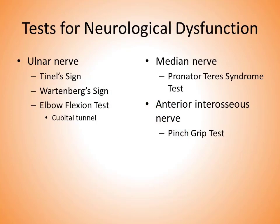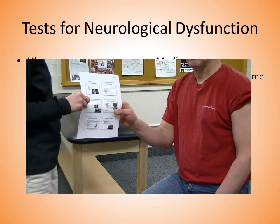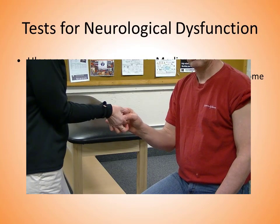There are other tests for neurological dysfunction to consider: the Tinel's sign for the ulnar nerve, the Wartenberg sign for the ulnar nerve, the elbow flexion test for the cubital tunnel specifically for the ulnar nerve, a pronator teres syndrome test for the median nerve, and a pinch grip test for the anterior interosseous nerve.